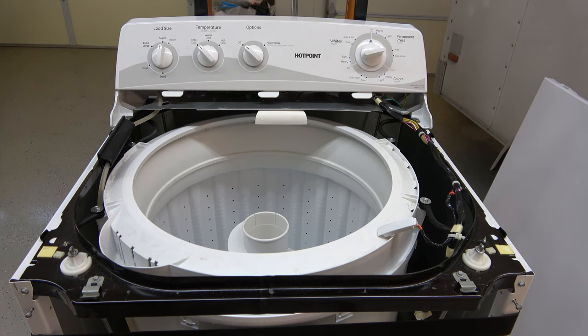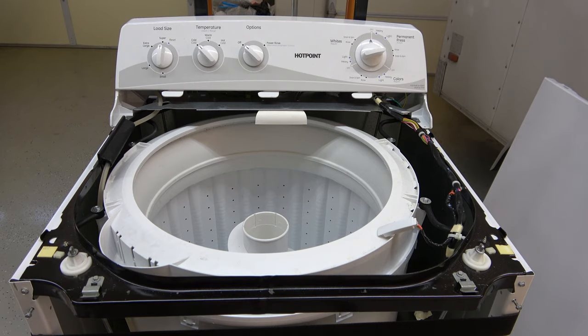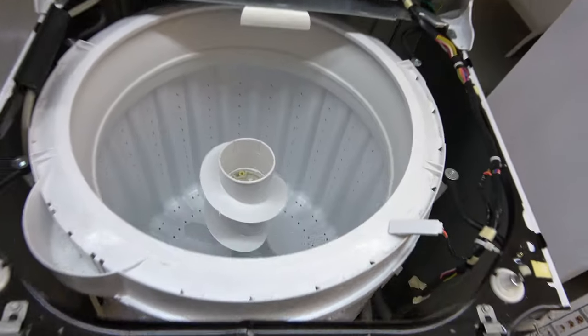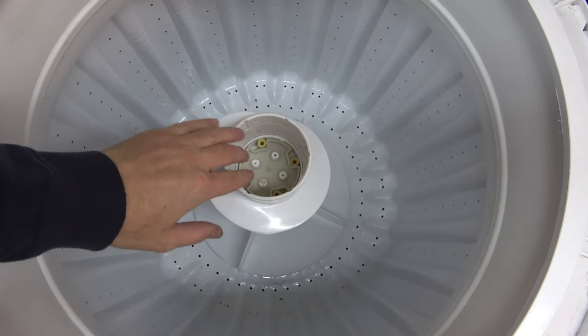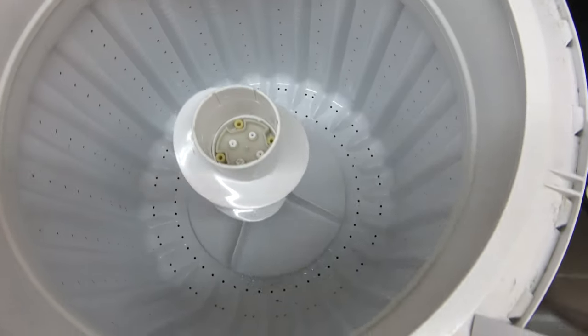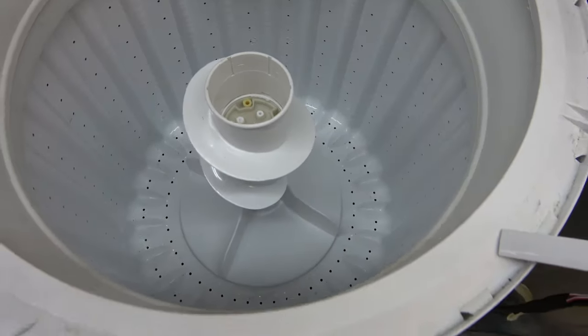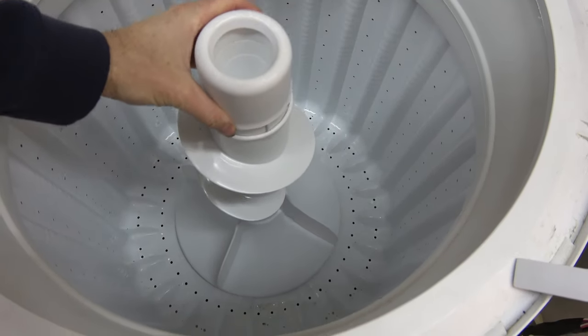I looked at other videos about removing an agitator, but this is a Hotpoint. I can't tell you what model specifically. It's a Hotpoint top-loading washer and the agitator looks like this. It had a plastic dome on there and then the cap on top. It had this on top initially for your softener.